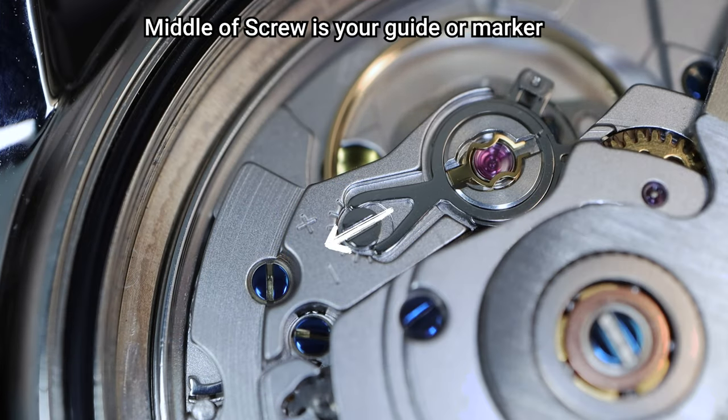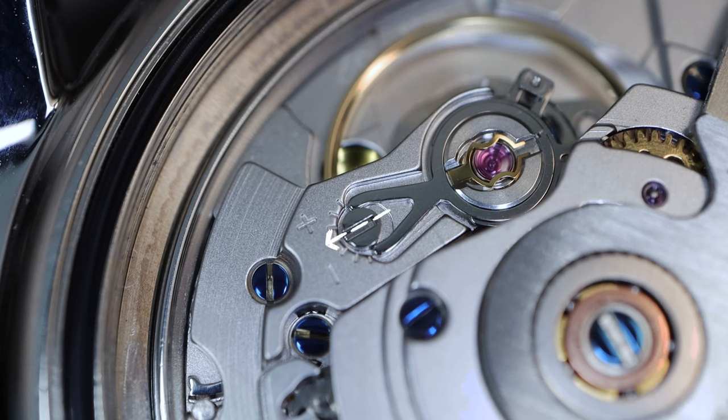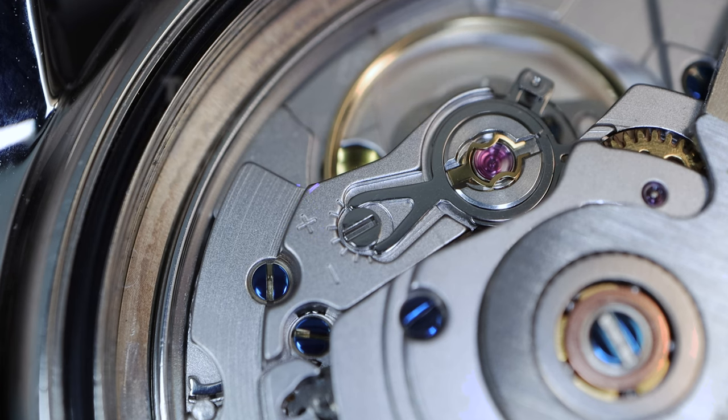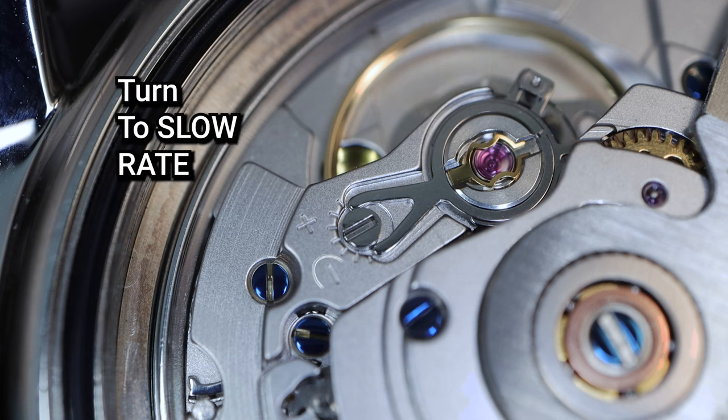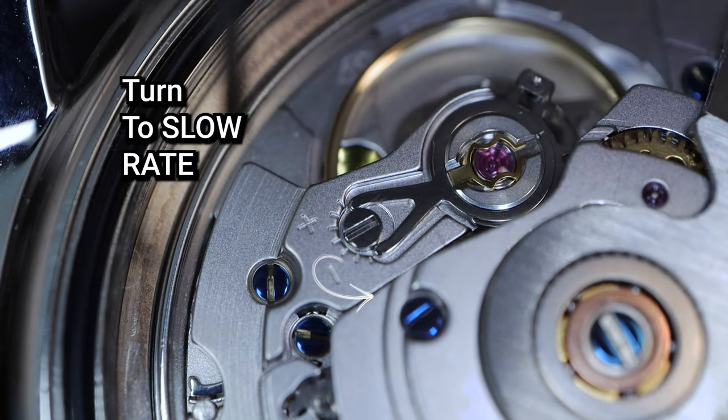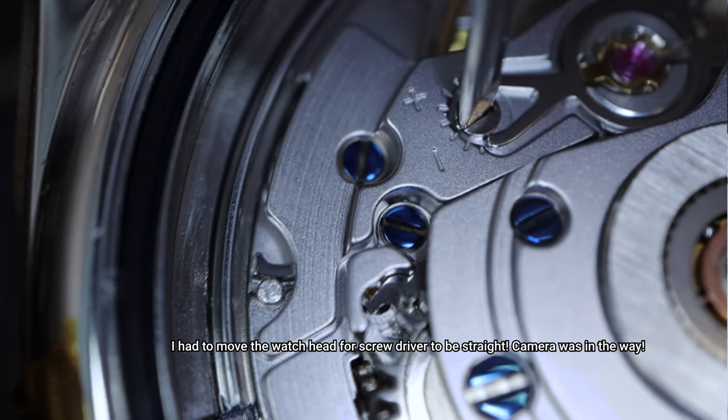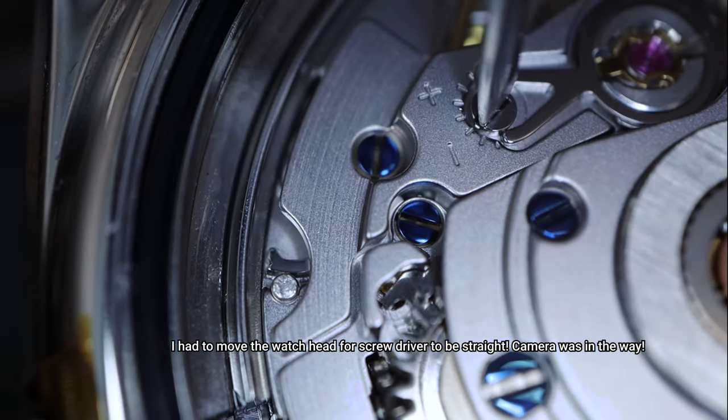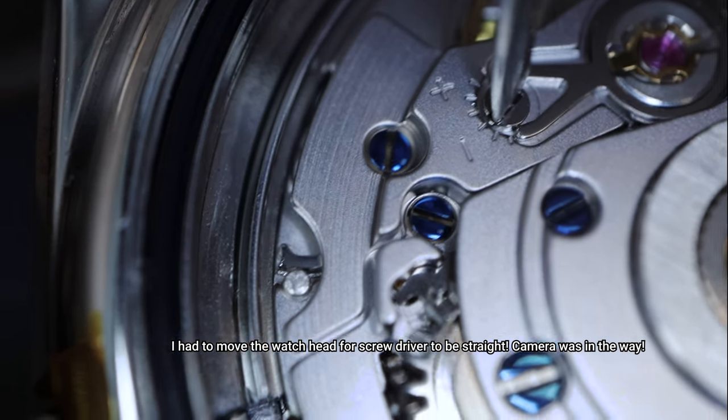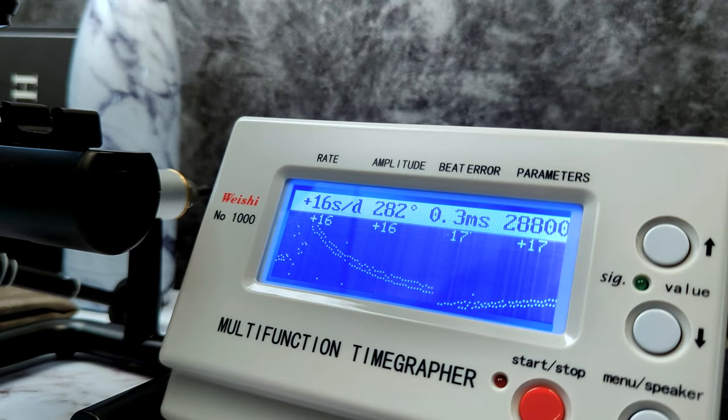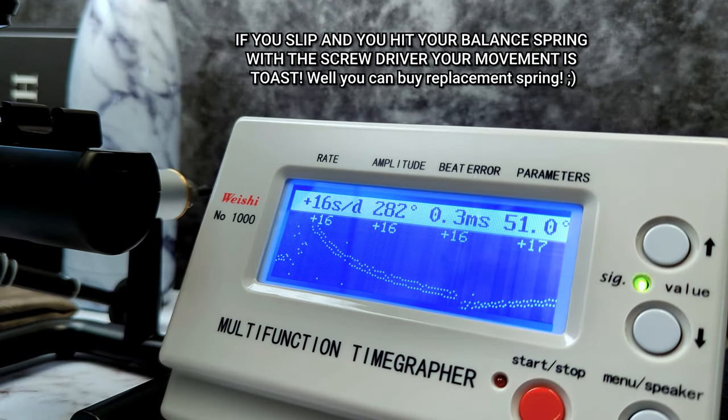First let's look at the screw. There is a plus and a minus, and the middle of the screw is what you want to align to the hash marks. Let's see how much variation we get when we move one notch slower. So right now we're exactly in the middle, dead center. We moved one notch to the left. Now let's see what happens on the time grapher. Going from plus 16, what does one notch do to a swiss movement.